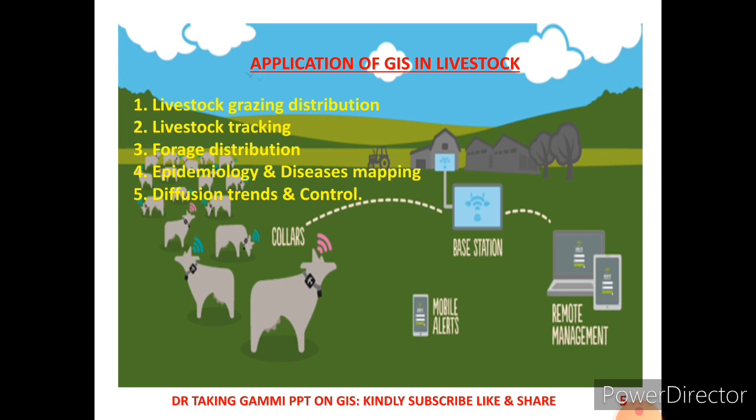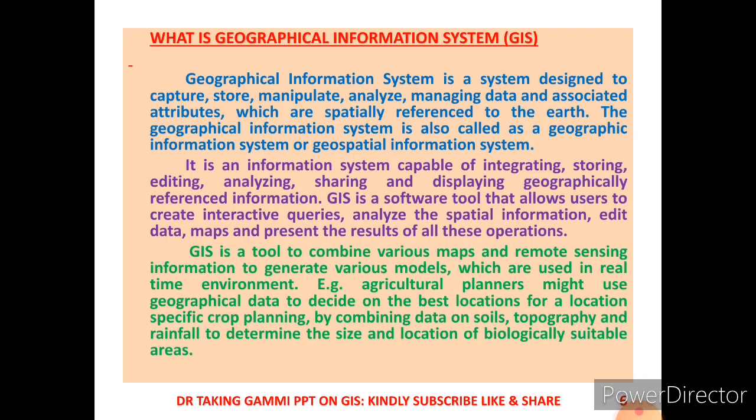In livestock management: number one, livestock grazing distribution. With the help of GIS we can track livestock, forest distribution, epidemiology and disease mapping, and the fifth is trend and control measures. So what is Geographical Information System? GIS is a system designed to capture, store, manipulate, analyze, and manage data and associated attributes which are spatially referred.